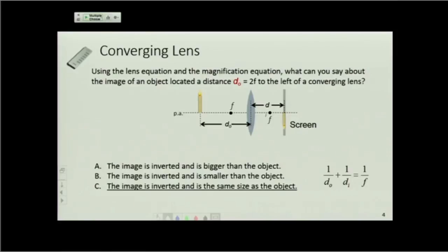Image distance has to change too, such that the sum of these remains equal to 1 over the focal length. The right hand side is fixed, so if I change one, the other changes.